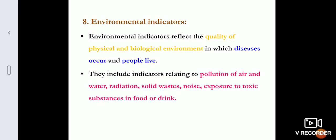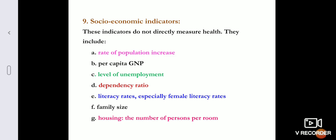Environmental indicators refer to the quality of the physical and biological environment in which diseases occur and people live. For example, air pollution in major cities has drastically reduced life expectancy. Other environmental indicators include water pollution, radiation, solid waste disposal, and exposure to toxic substances in food or drink.